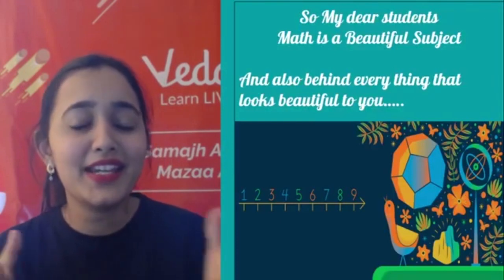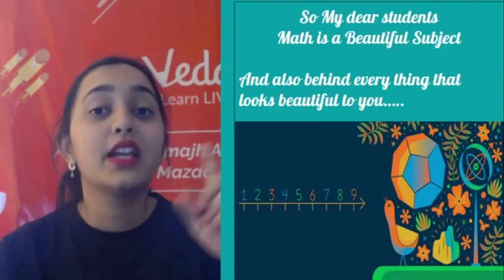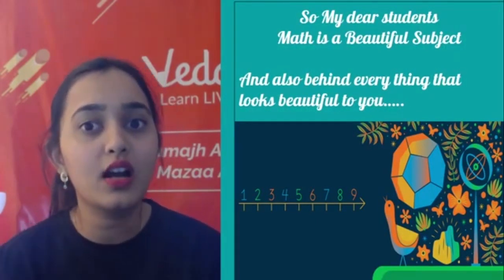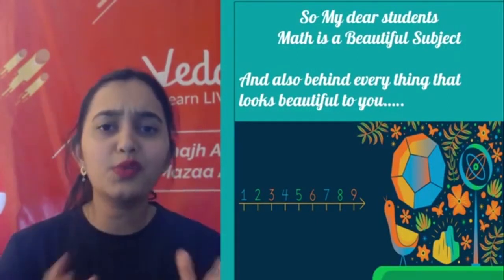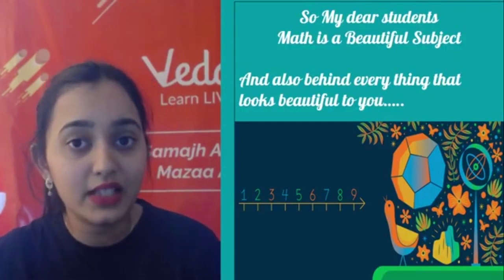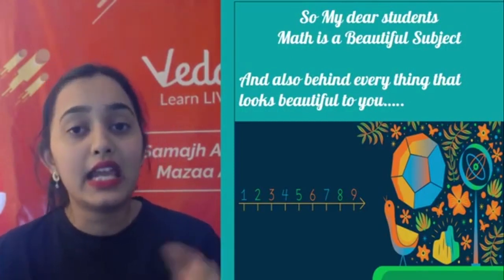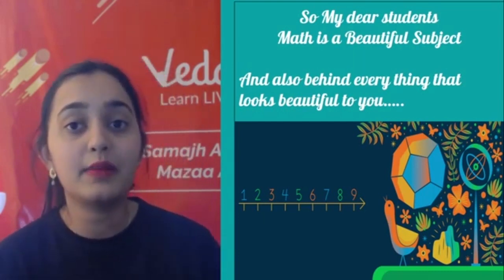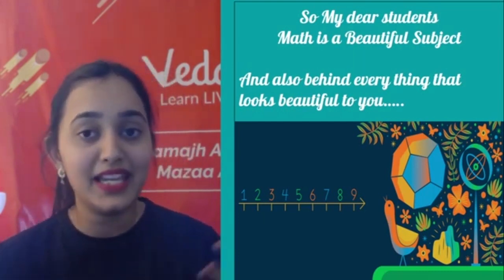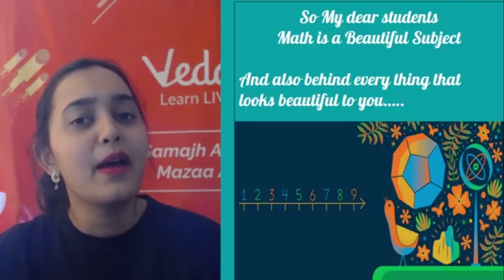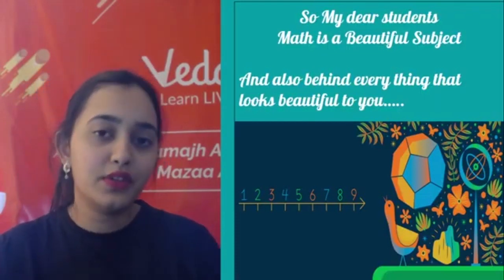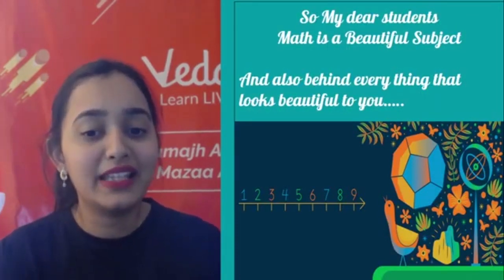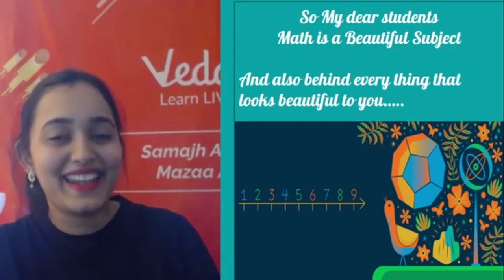So you can see how the Fibonacci sequence is present almost everywhere in our nature — in every thing that we find attractive and beautiful. It is a special sequence followed by our flowers, our trees, our plants, and many many other things. Math is definitely a beautiful subject, but also it is behind every beautiful thing which looks nice to you.